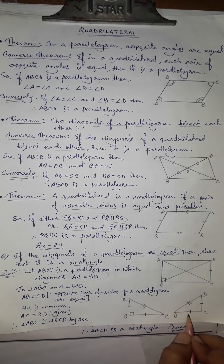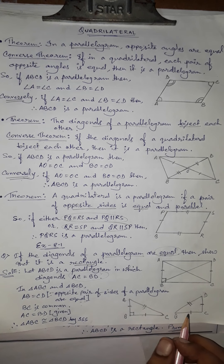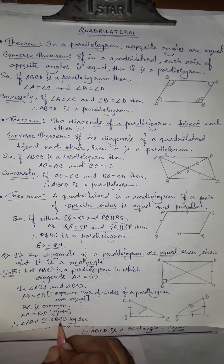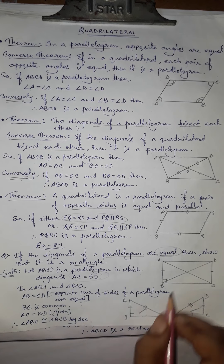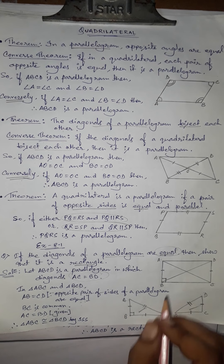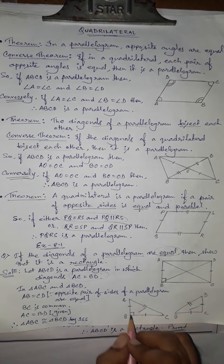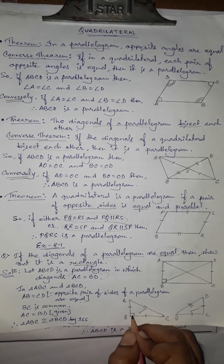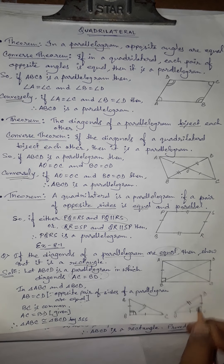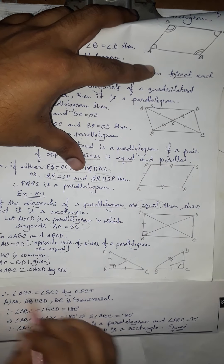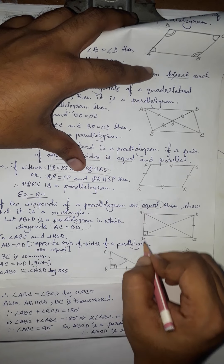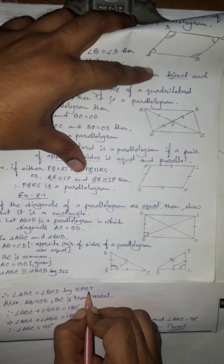When two triangles are congruent, their corresponding parts are equal. Since our objective is to prove an angle is 90 degrees, we note that angle ABC equals angle BCD by CPCT — corresponding parts of congruent triangles. So angle ABC equals angle BCD.